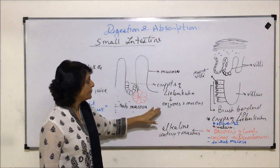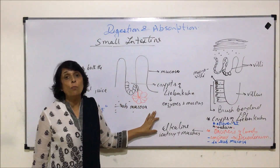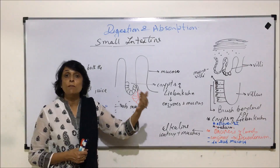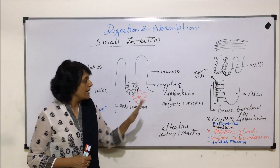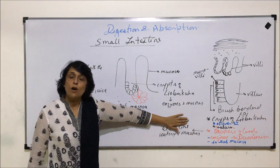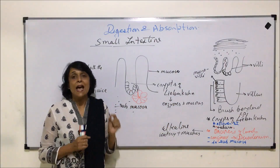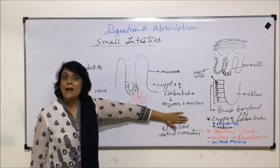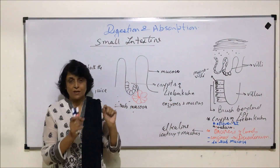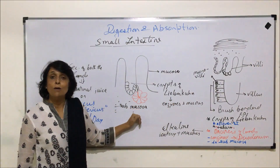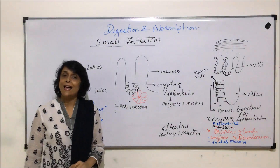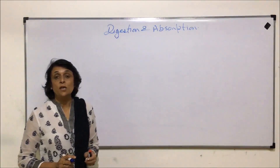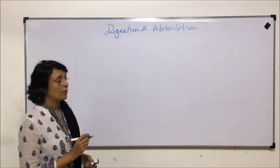One more additional thing: in the duodenum, open the ducts which bring secretion from the liver as well as from the pancreas. After this, we will talk about large intestine and then see how the various juices are poured into the duodenum. Duodenum is the part of small intestine, and we will talk about this after we have discussed the large intestine.